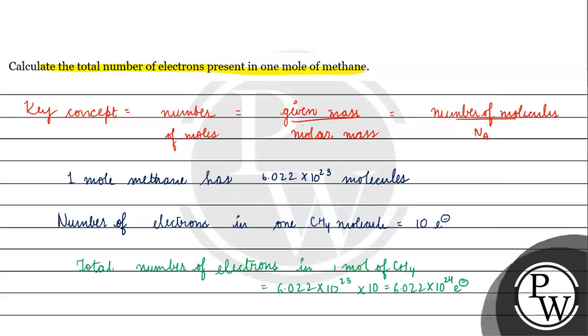The final answer for this question is 6.022 × 10²⁴ electrons present in one mole of methane. I hope you understood. Thank you and all the best.